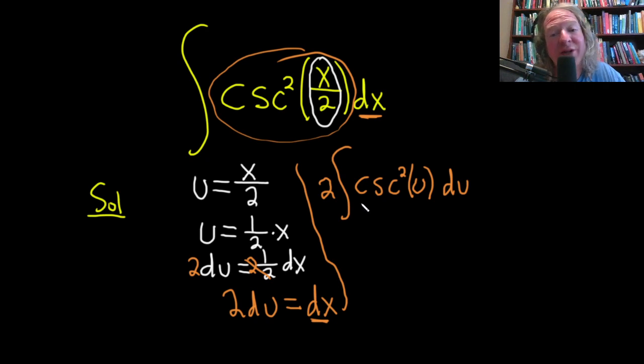So we have to integrate this. What's a function whose derivative is cosecant squared? The derivative of cotangent is negative cosecant squared. So this is going to be equal to negative cotangent of u plus our constant of integration capital C. The 2 just hangs out.